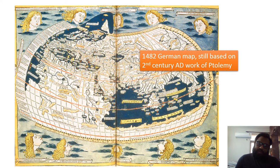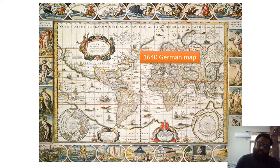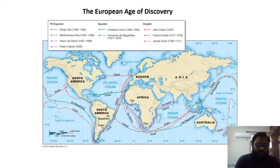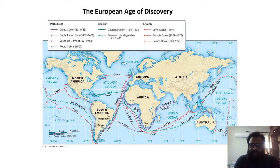This was the work of Ptolemy — a 1482 map of Germany based on Ptolemy's work. All of you must be aware that there was an Age of European Discovery where Portuguese, Spanish, and English explorers started voyaging across the globe, finding new continents and new places, and that is where the importance of maps truly came in.